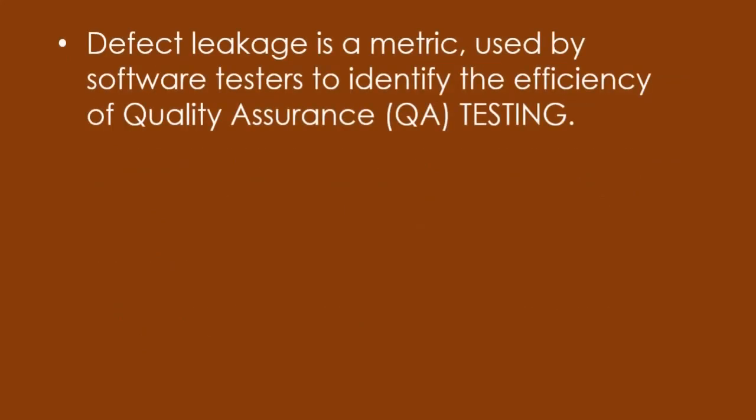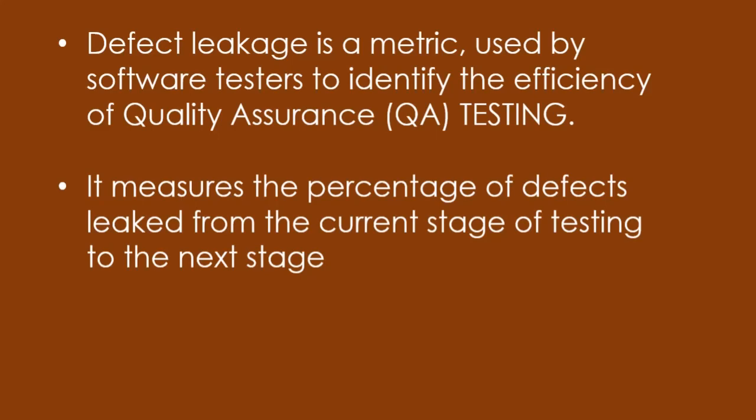Defect leakage is a metric used by software testers to identify the efficiency of quality assurance or QA testing. It measures the percentage of defects leaked from the current stage of testing to the next stage. Whatever defects are missed from QA will be calculated along with the defects found in production, in order to calculate the total number of undetected defects or errors. Software engineers follow an approach known as defect leakage, which helps them calculate the total defects present in the software system.